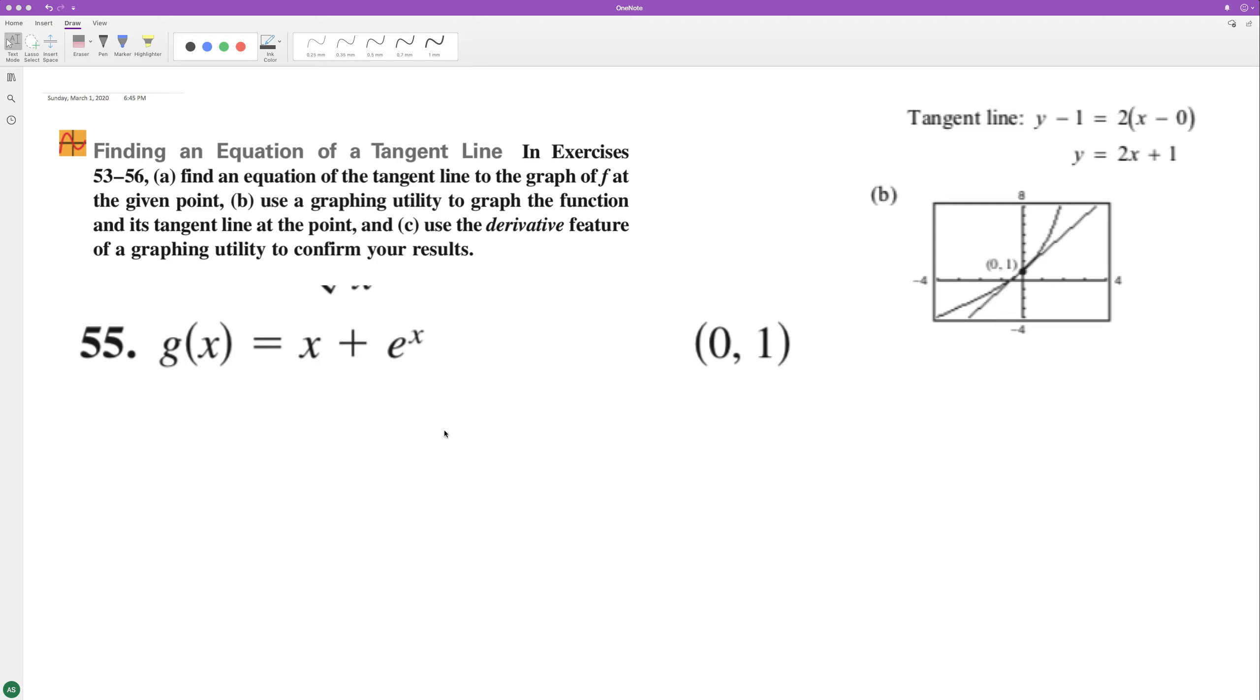Let's find the tangent line of this equation at the point (0, 1). First thing we need to do is find the slope and plug this into the point-slope form.